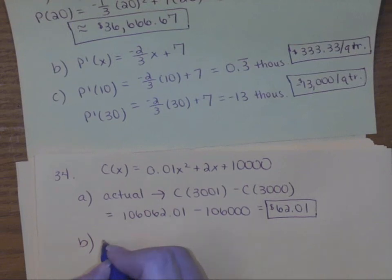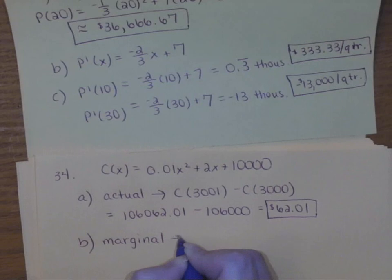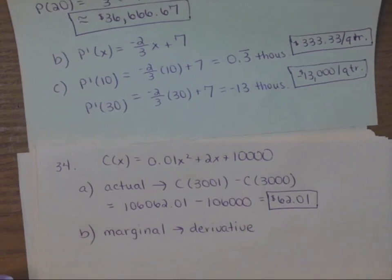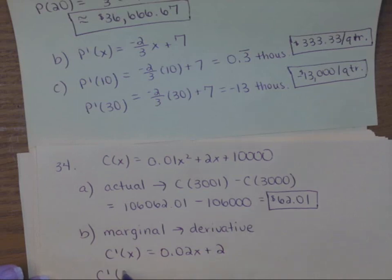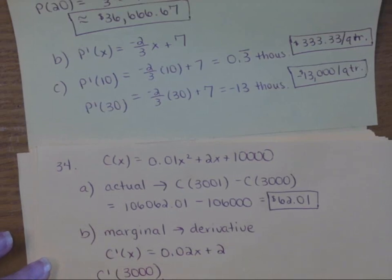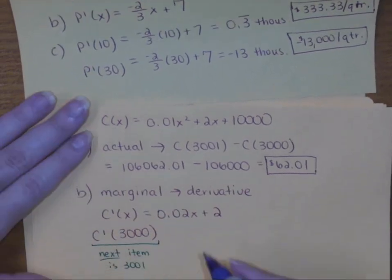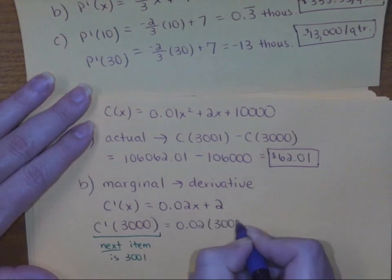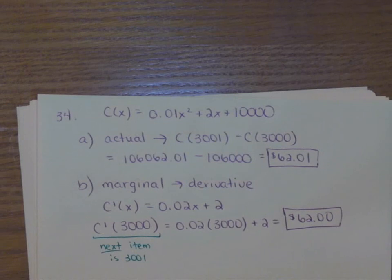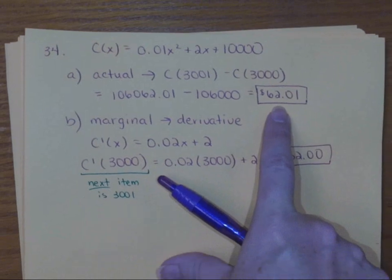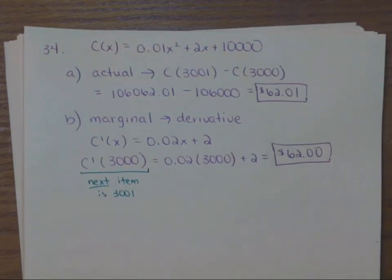For part b, when you see 'marginal' you should automatically think derivative. The derivative of the cost function is 0.02x plus 2. To find the marginal cost of the 3,001st unit, remember marginal means the next item, so we plug in 3,000. Notice we get an answer that's really close to what we got in part a — it's off by just one penny. The marginal cost is an approximation for the actual cost, and we're just one penny off.